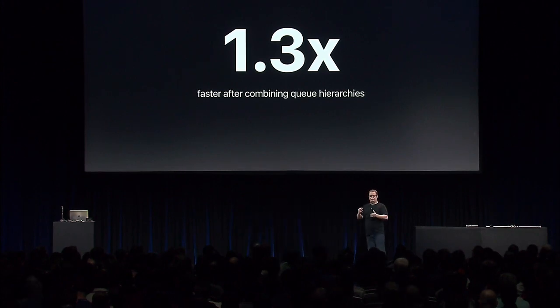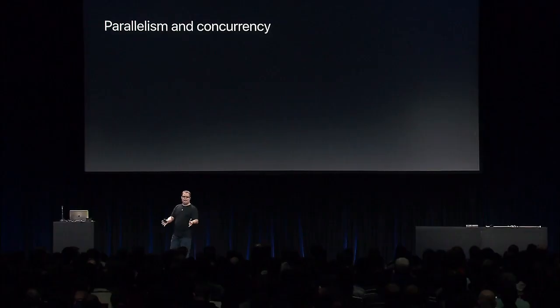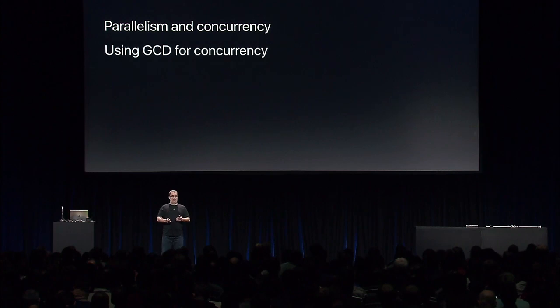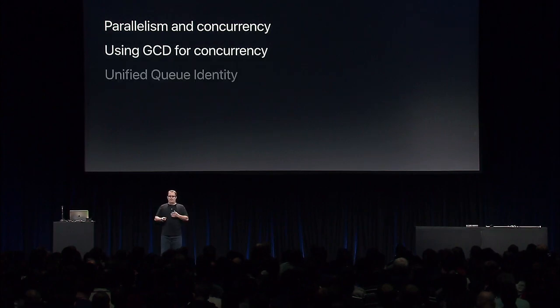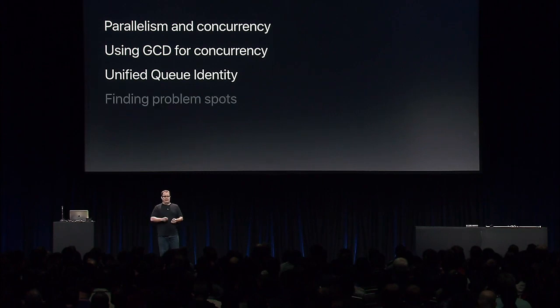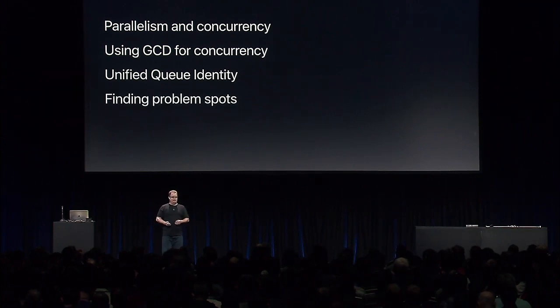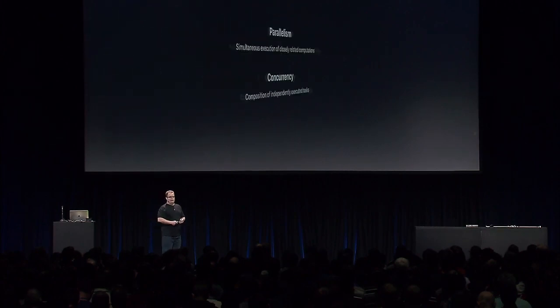When we applied some of the optimization techniques we'll discuss today, we saw large speed-ups from simple changes to avoid these problematic patterns. Using these techniques lets you bring high-performance apps to more users with less work. Today we're going to discuss how to best express parallelism and concurrency, introduce unified queue identity — a major under-the-hood improvement to GCD — and show you how to find problem spots in your code with Instruments.